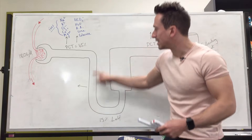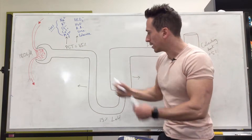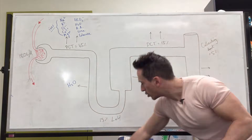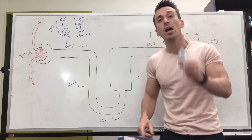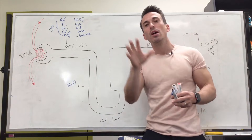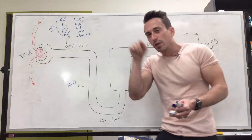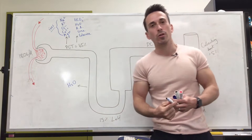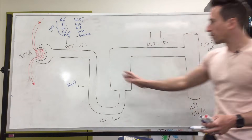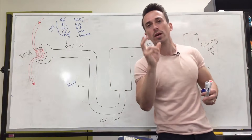At the thin descending limb of the loop of Henle, water is the only thing that's reabsorbed. This is really important because the longer this thin loop of Henle is, the more water gets thrown back into the body. That's important in times of dehydration. Desert-dwelling animals that don't ingest enough water have a very long loop of Henle in their kidneys, because it helps concentrate the urine. Whatever stays in the tubule becomes urine — so if we throw more water out, what remains becomes more concentrated.